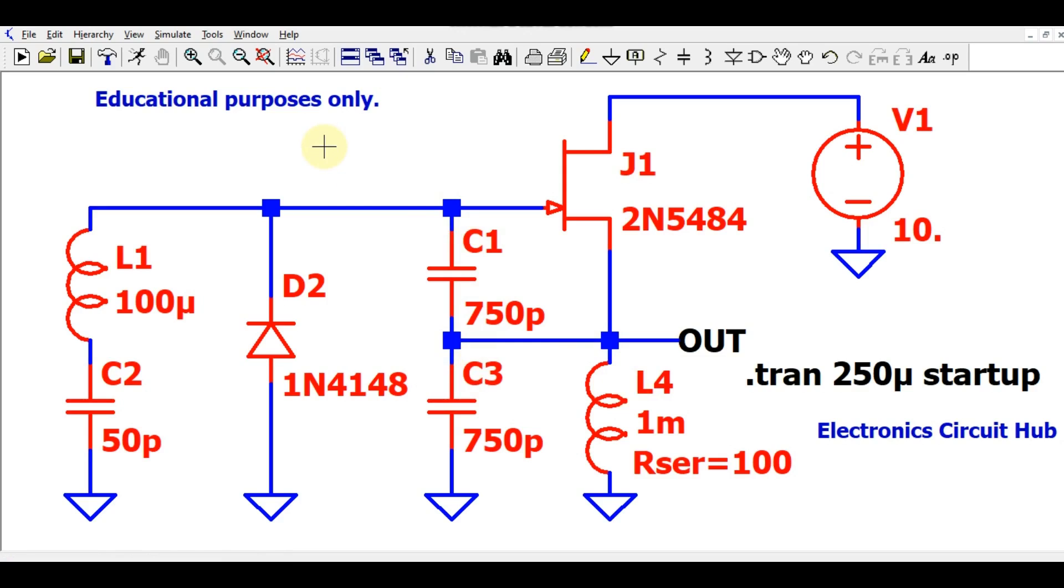What is basically a Clapp oscillator? This is an advanced version of the Colpitt oscillator. The frequency for this Clapp oscillator is given by f0 = 1 / (2π√LC).